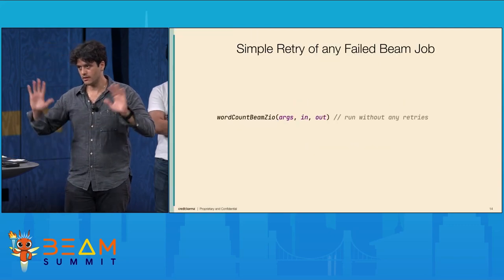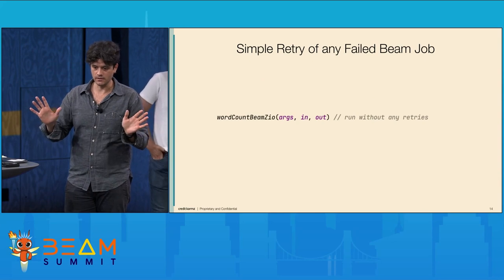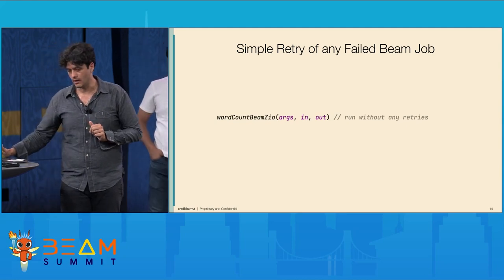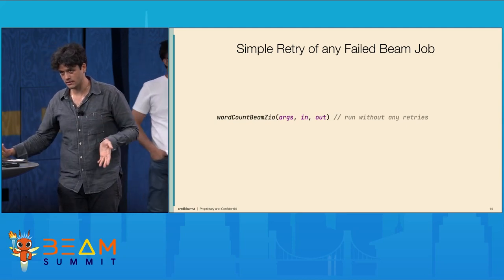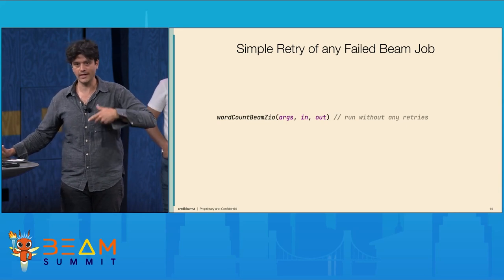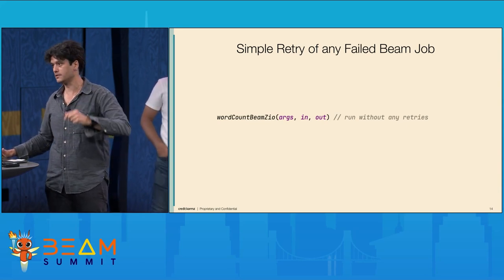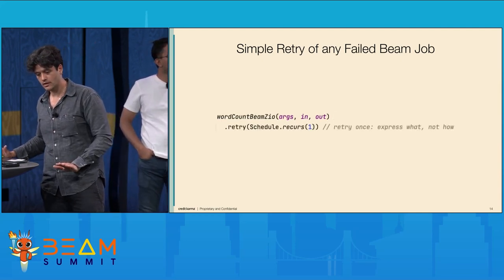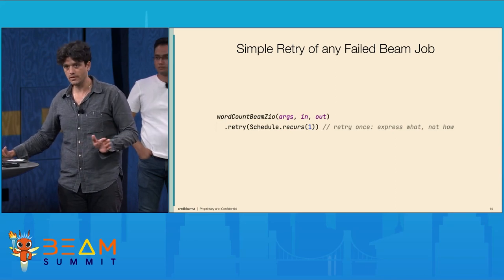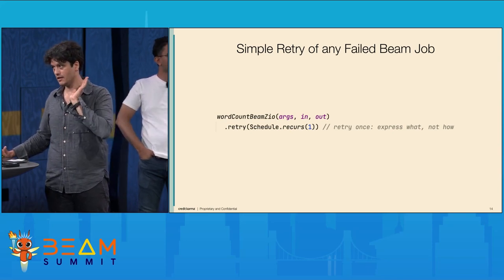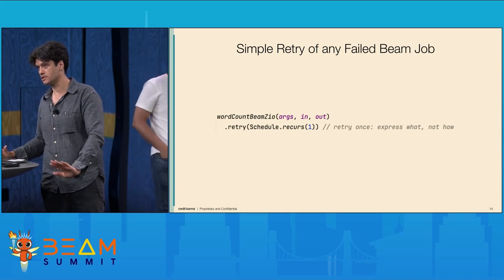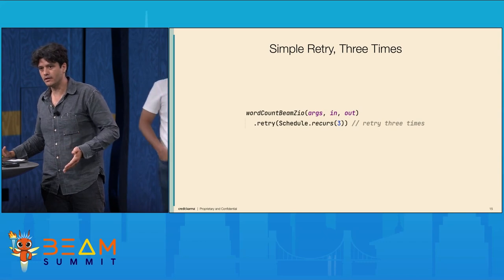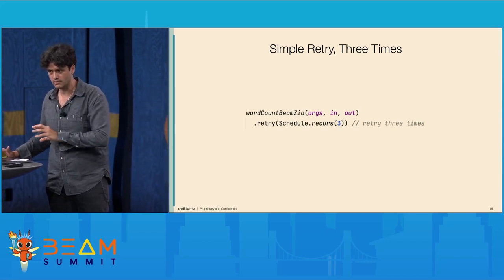What does it feel like to write code with ZIO? Remember the wordCountBeamZio job? If I told you you need to retry this job — you might try-catch it, put it in a while loop with vars. No. All you have to do is say `.retry`. You say I'm going to recur once. This is very declarative — you're saying what you want, not how. And if you actually want to retry up to three times if it fails, you just express that.